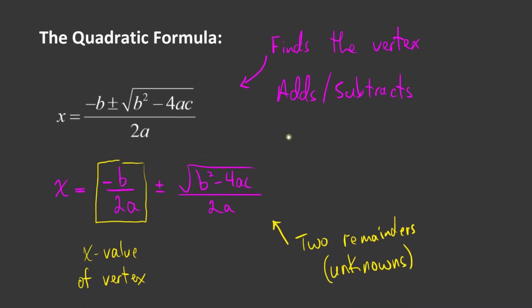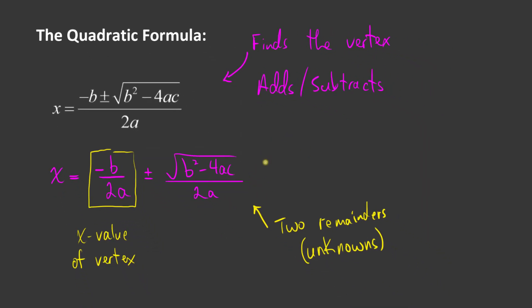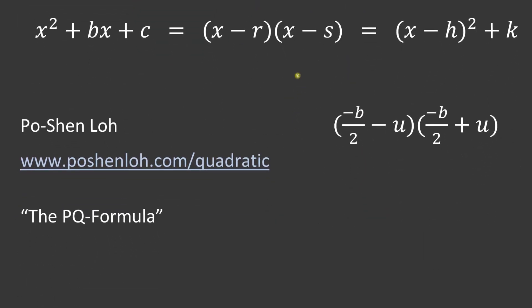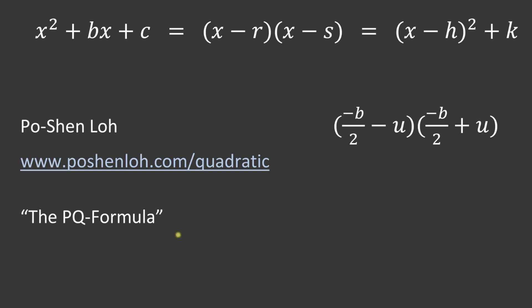The quadratic formula handles finding the zeros for us pretty much every time, and factoring is quick, but recently a new way of doing it has gained traction online. It's been shown off a lot by a mathematician called Po-Shen Lo — he has a lot of material on his website about it. Essentially what he's doing is connecting the relationship between standard form, factored form, and vertex form using a trick called the PQ formula. He's making it a little easier to use.